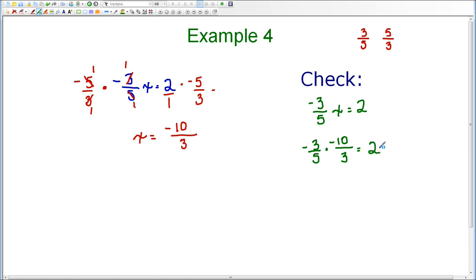Now, you could simplify or multiply straight across. Negative three times negative ten is negative thirty. And five times three is fifteen. And I know that negative thirty divided by fifteen is two. So I do end up with two equals two.